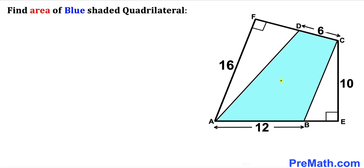Welcome to Pre-Math. In this video we have a blue shaded quadrilateral ABCD confined in a bigger quadrilateral AECF, as you can see in the diagram. The side lengths of the blue shaded quadrilateral are 6 and 12 units, the side lengths of the bigger quadrilateral are 10 and 16 units, and furthermore these two marked angles are right angles.